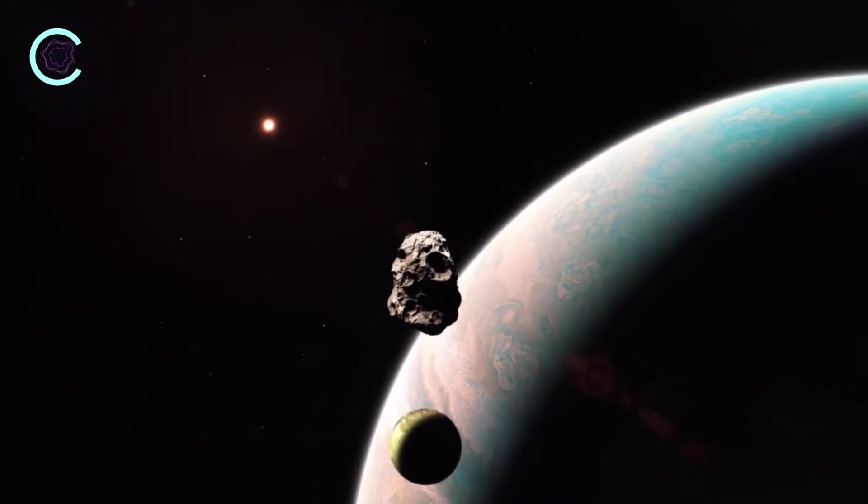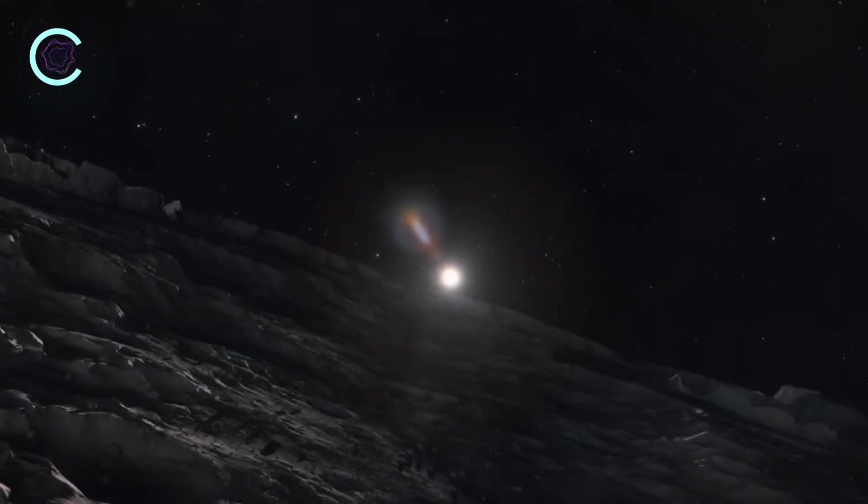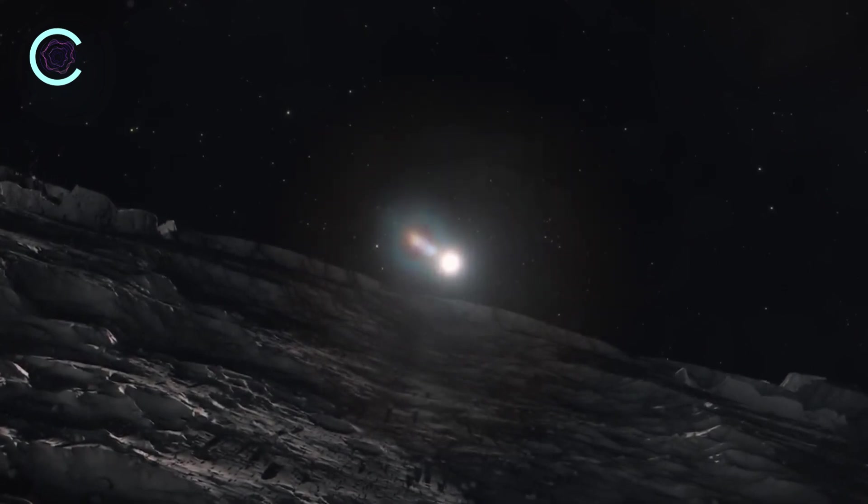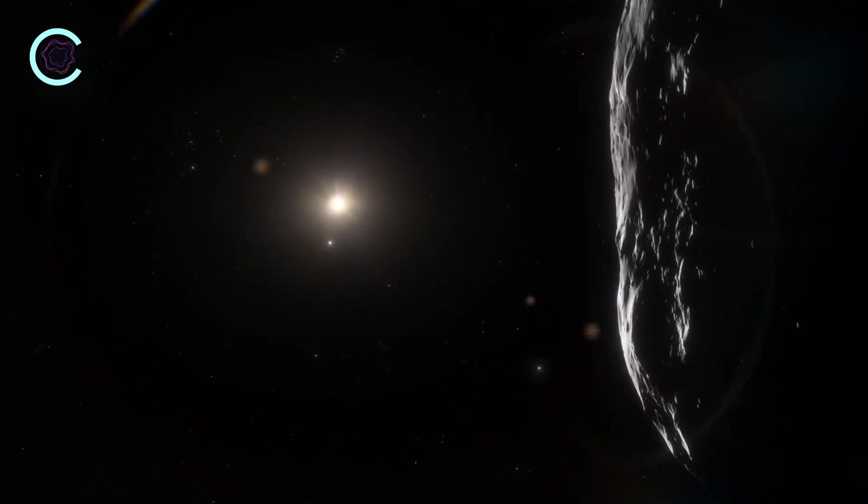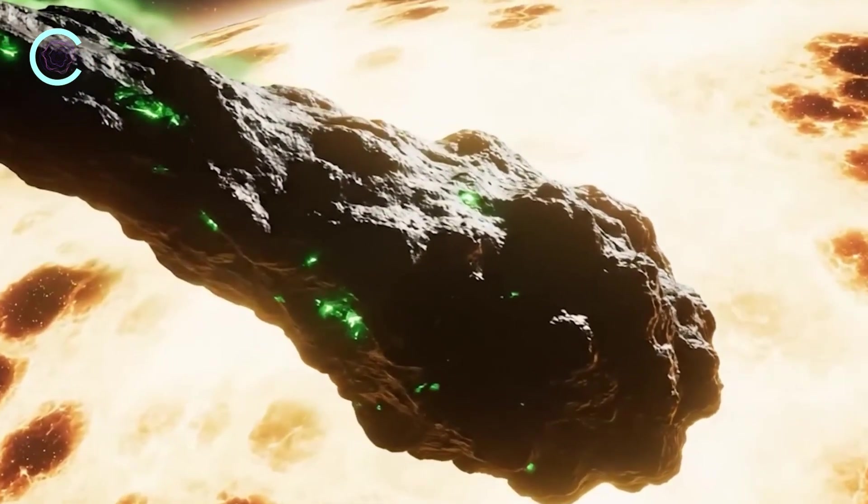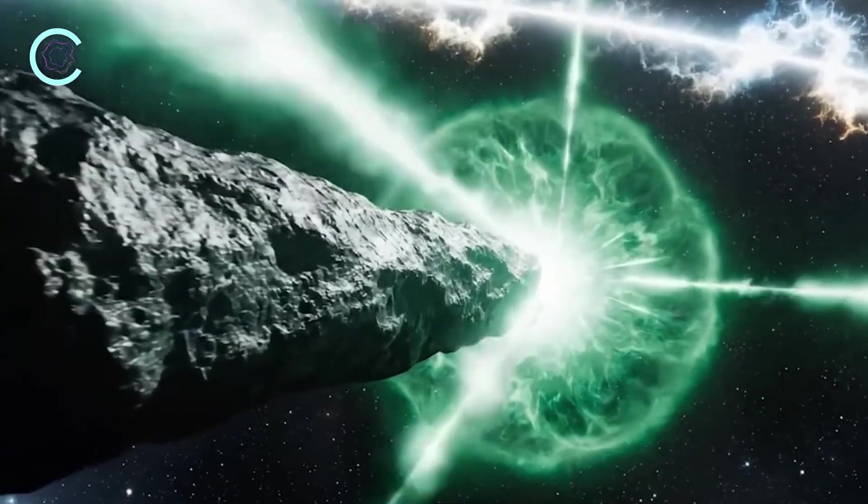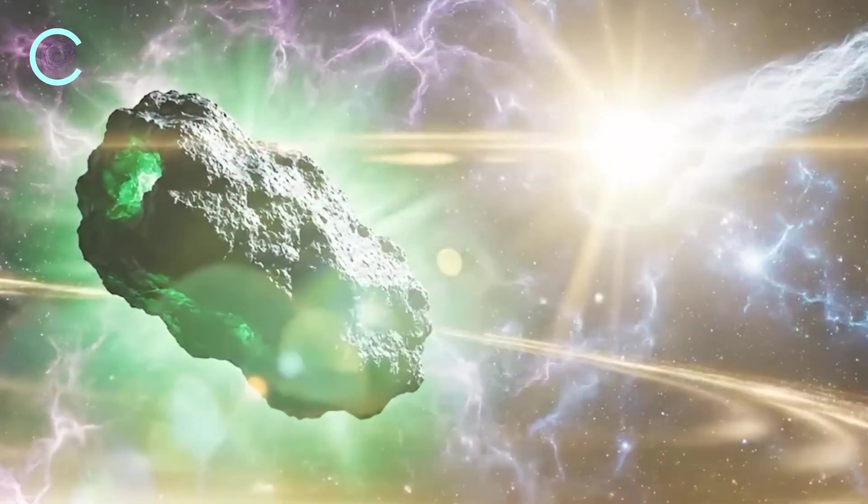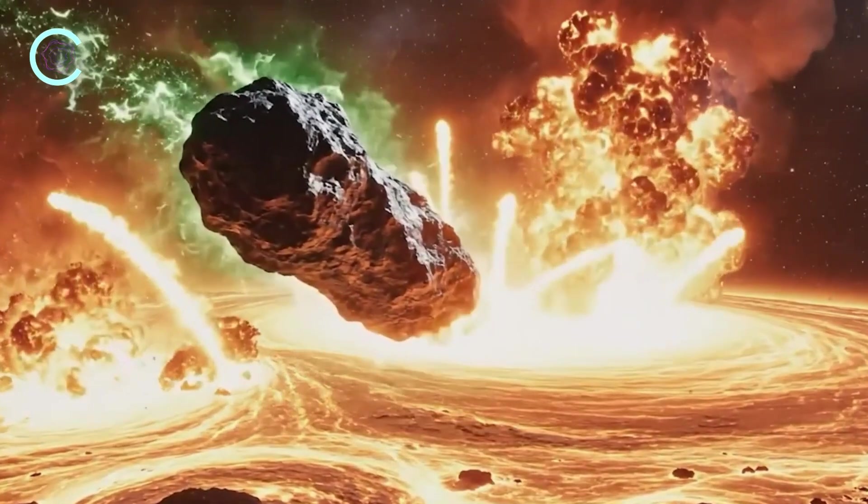Now, none of this proves 3I Atlas is artificial. There is no direct evidence that it's a machine, a probe, or anything designed, but none of it rules out that possibility either. Not even close. And as this object travels deeper into our solar system, one feeling becomes harder and harder to shake. We may be witnessing something humanity has never seen before — something that could redefine our understanding of what exists out there. Because whatever 3I Atlas truly is, it's still coming.